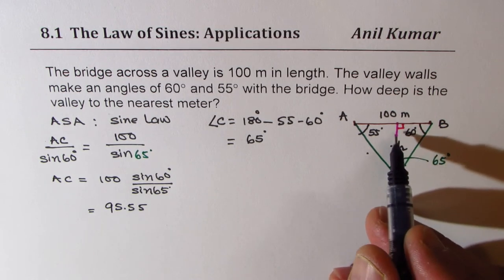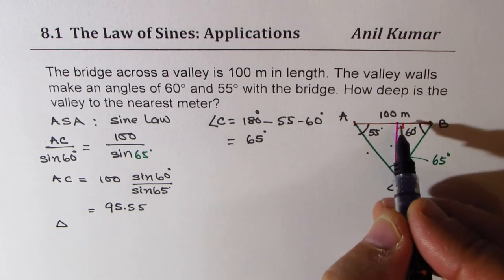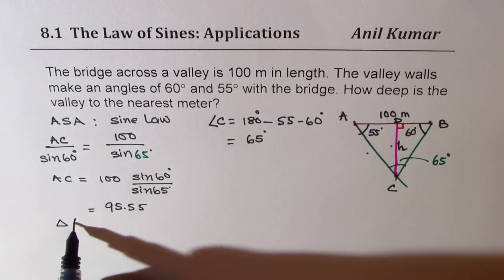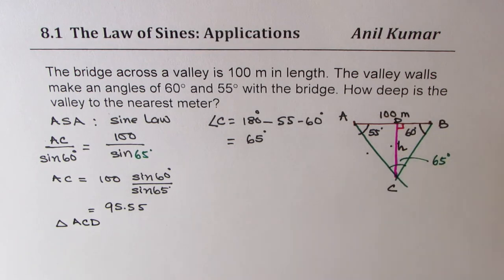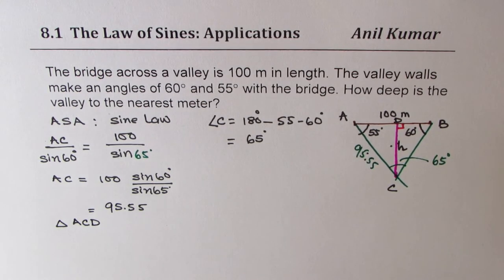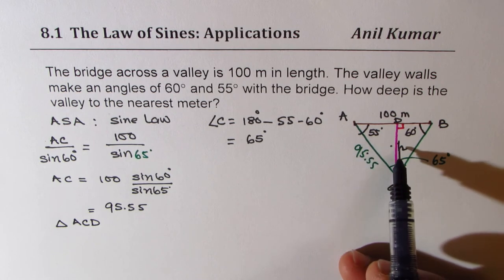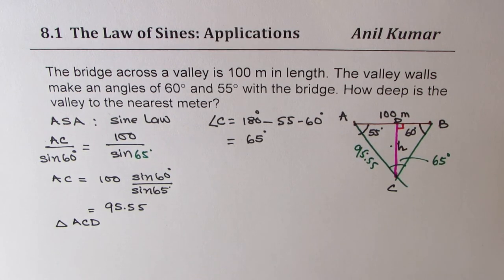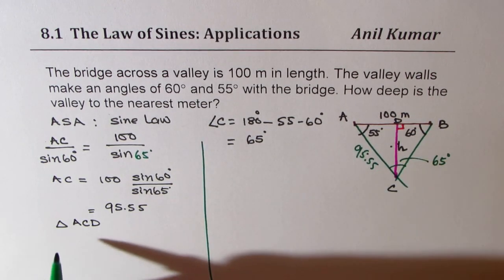Now we can find the height. So now we'll consider the triangle. Let's call this point here as D. So we'll consider the triangle ACD. Now in this particular triangle, we just found that AC is 95.55. To find the height, we'll use the angle 55. And we know height and hypotenuse. So we can use sine ratio.